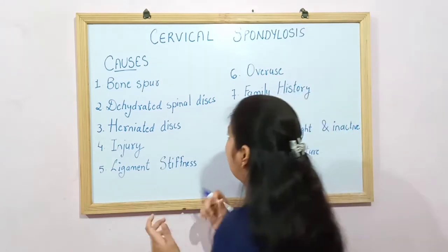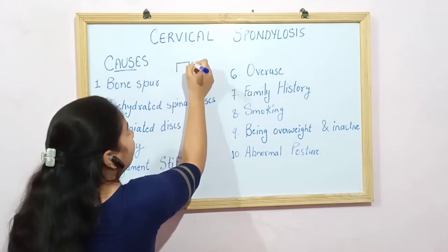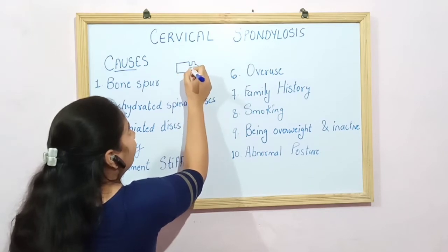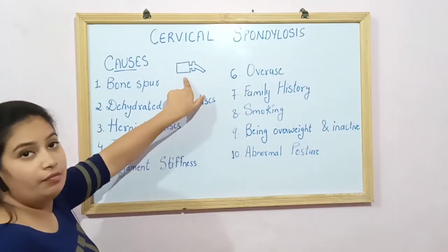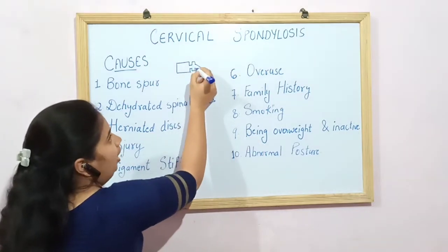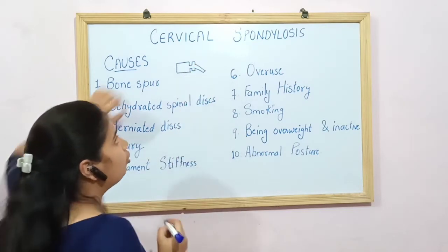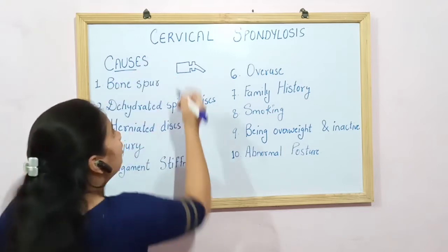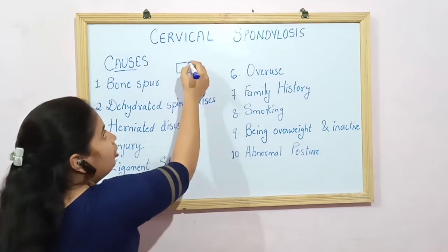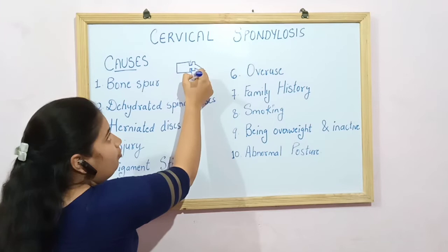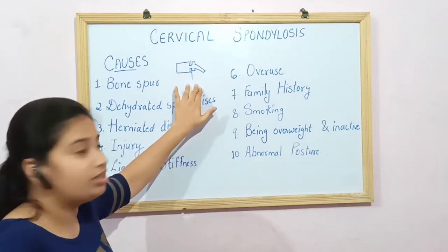Let me show you how these bone spurs look. This is the structure of your vertebral body from the lateral view. This is your spinous process and this is your body part. In between, your spinal cord is present. If these bony overgrowths occur, they can compress the spinal cord, causing a compressed spinal cord as well as compressed nerve roots, and causing you symptoms.